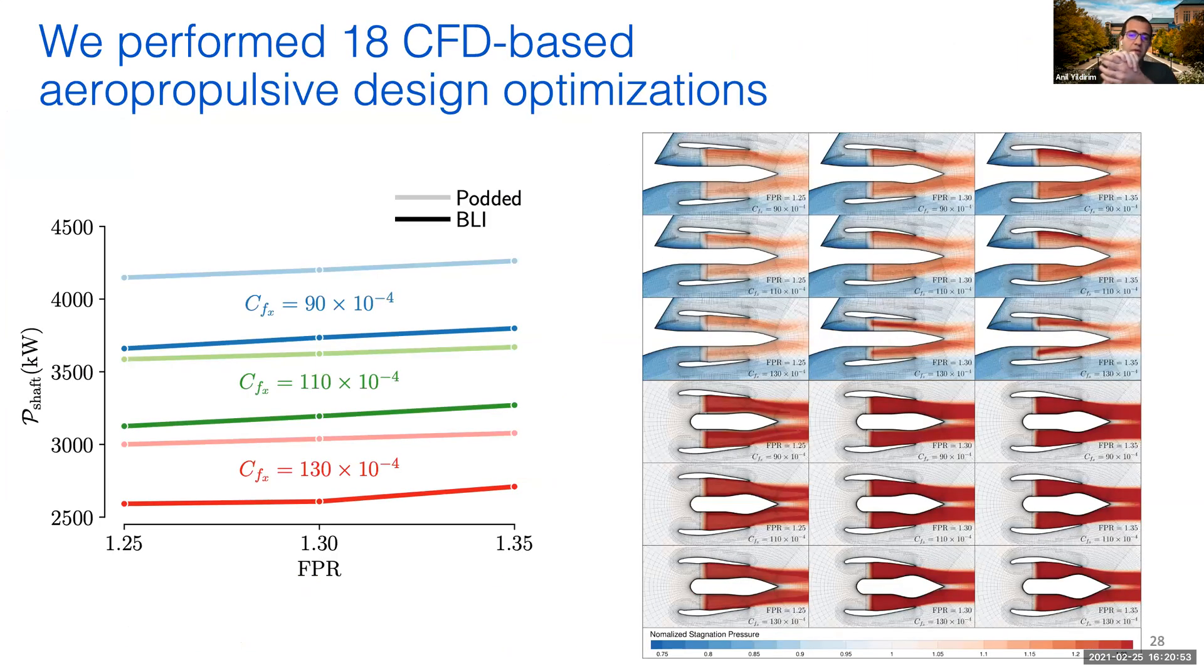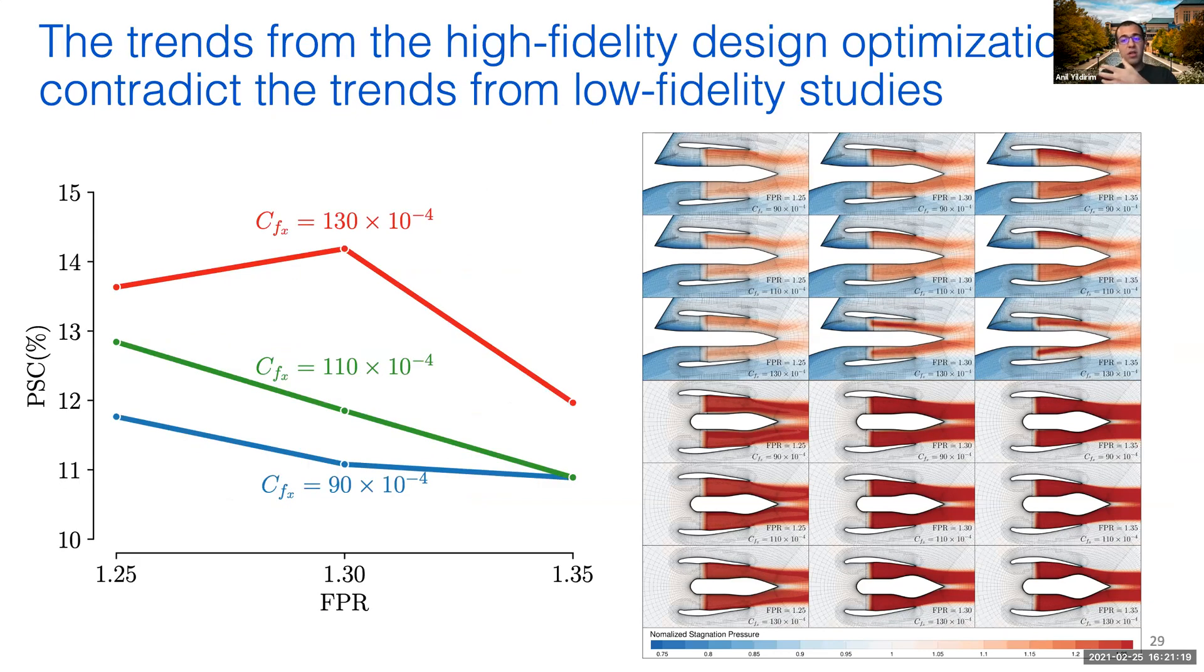Using this approach, we optimized the design of both BLI and podded configurations at a combination of three fan sizes and three fan pressure ratio values. This results in nine optimizations for each configuration. In total, we performed 18 CFD-based aeropropulsive design optimizations. The plot on the left shows us the power requirements of each optimized design. Using these results, we computed the power saving coefficient values at nine design points. The plot on the right shows the trends we obtained.